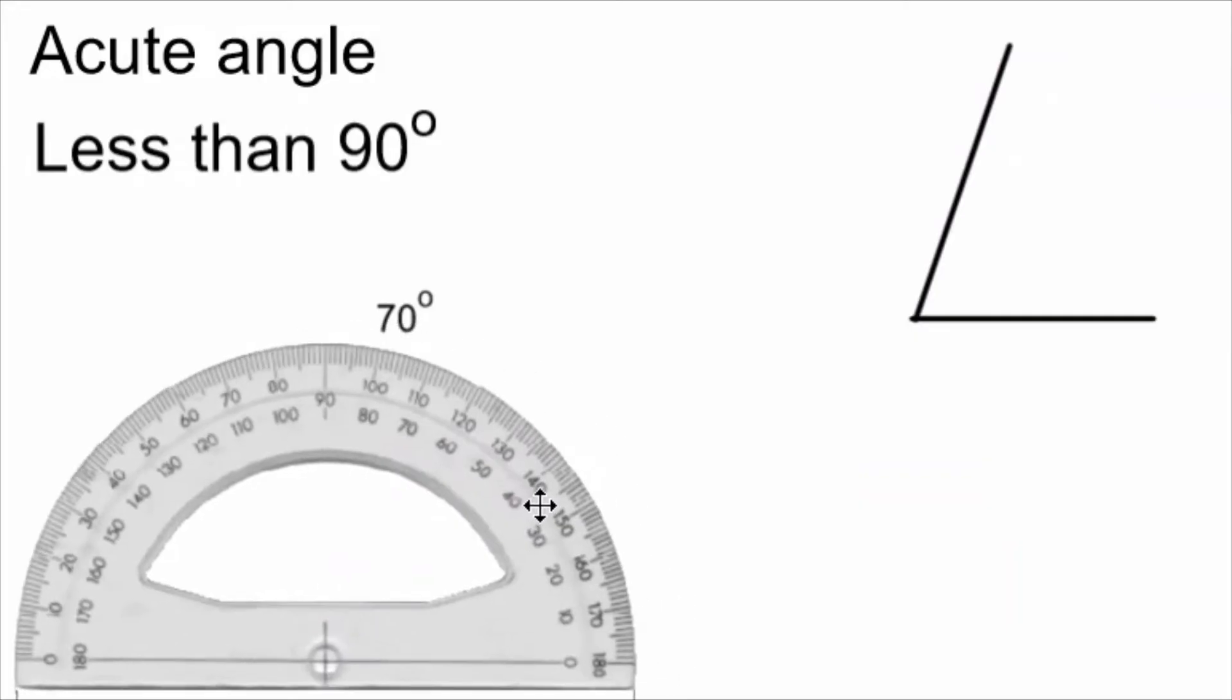I can move the protractor out of the way, and I want to label my angle. I'm going to label it with its measurement, which is 70 degrees, and I do that showing an arc. An arc is a curved line that you can draw. This one is a little messy, but that's okay.